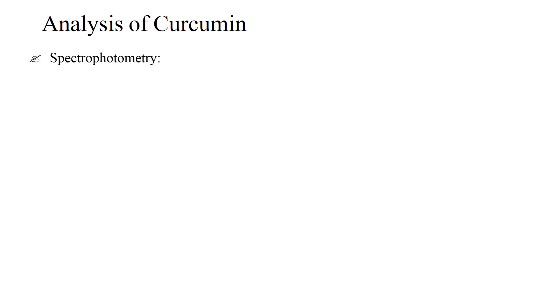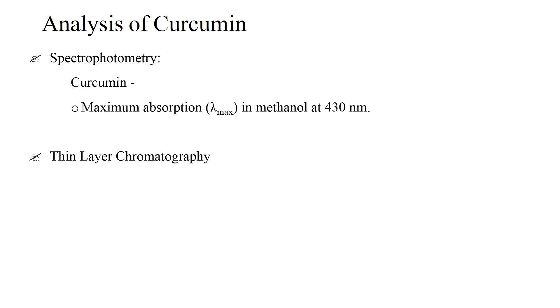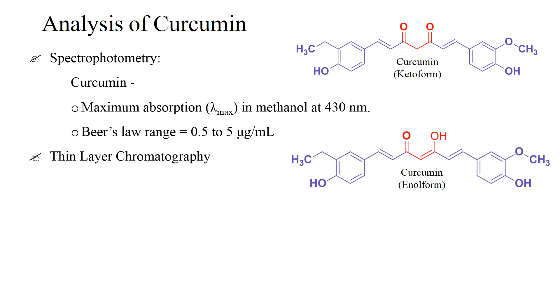Now, analysis of curcumin. There are a number of methods for the analysis of curcumin; here we will discuss only two methods: first, spectrophotometry, and second, TLC. Curcumin has a maximum absorption (lambda max) in methanol at 430 nanometers, and the Beer-Lambert law range is 0.5 to 5 micrograms per ml.